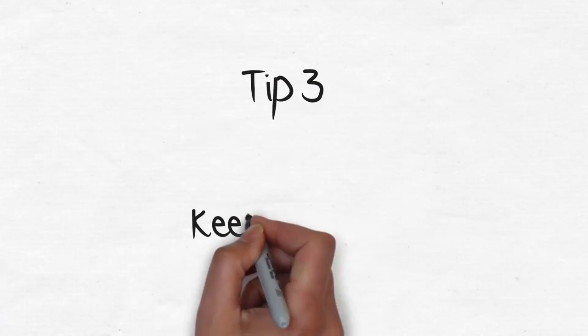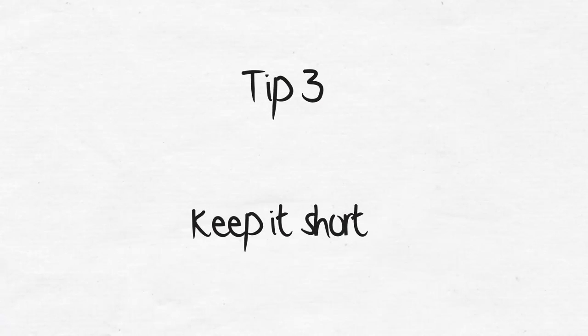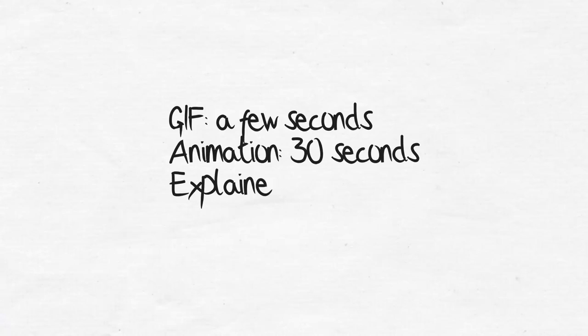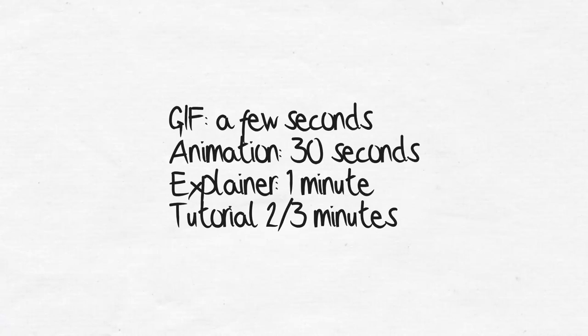Very important, of course, is to keep it short. Let's keep a rule like a few seconds for an animated GIF, half a minute for an animation, one minute maybe for an explainer video, two or three minutes for educational content like how-tos.